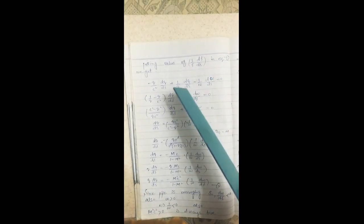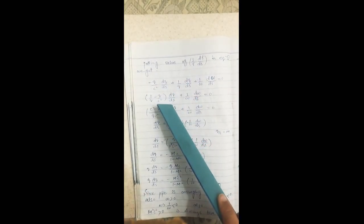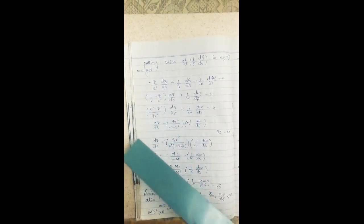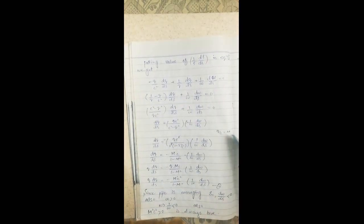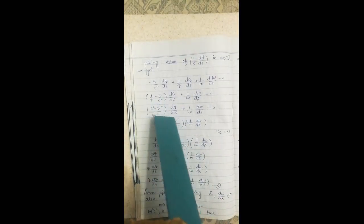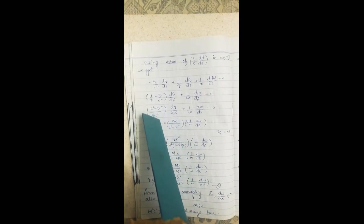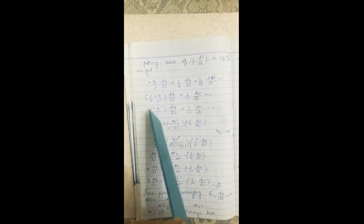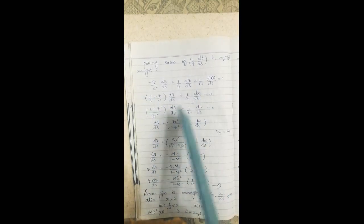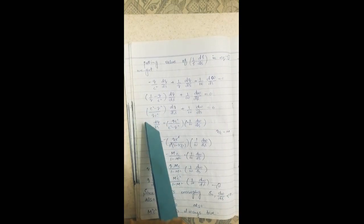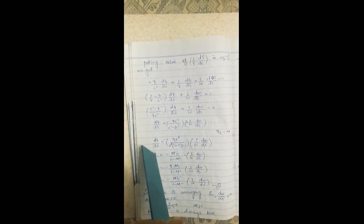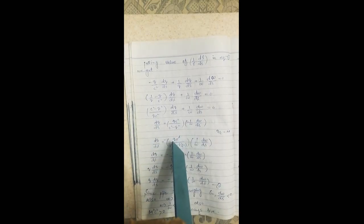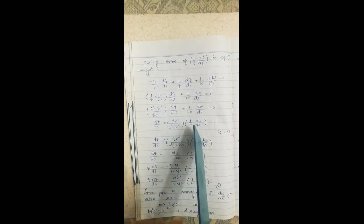Taking dq/ds common from the first and second terms, we get: [(-q/c²) + (1/q)]·(dq/ds) + (1/ω)·(dω/ds) = 0. Moving (1/ω)·(dω/ds) to the right-hand side and solving, we obtain: dq/ds = -(q / (1 - q²/c²))·(1/ω)·(dω/ds).